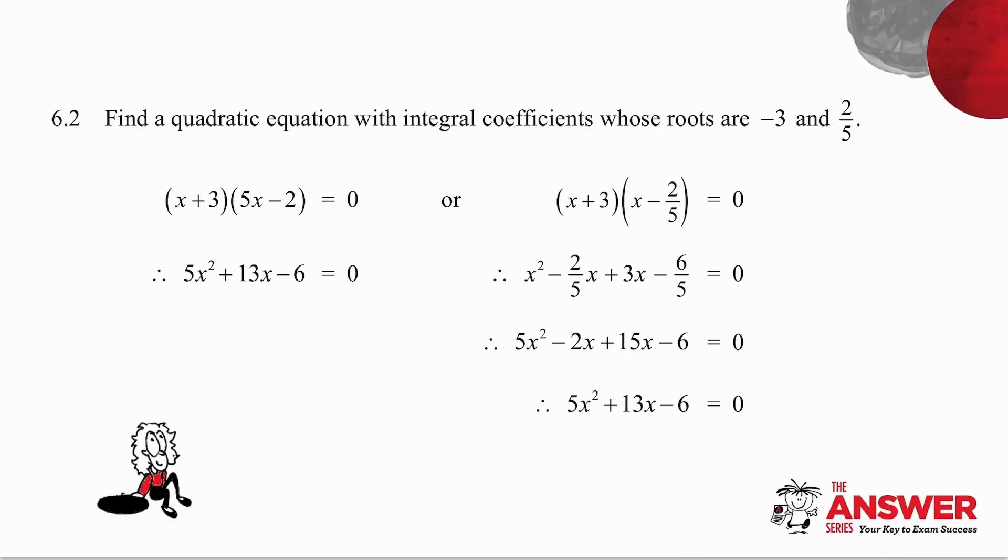You need to find in this example a quadratic equation with integral coefficients and you've been given both the roots. Minus three comes from what bracket? It must come from a bracket x plus three, because if x plus three equals zero, then x is equal to minus three. But what about the two over five? So if you think if x is equal to two over five, multiply both sides by five and you get 5x is equal to two, which means 5x minus two is equal to zero. So that root of two over five comes from a bracket 5x minus two.